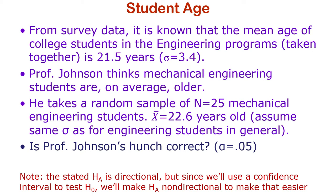Another example: from survey data, the mean age of college students in an engineering program is 21.5 years old with a standard deviation of 3.4 years. Professor Johnson thinks mechanical engineering students are actually older. He takes a random sample of 25 mechanical engineering students and finds their mean is 22.6 years old.